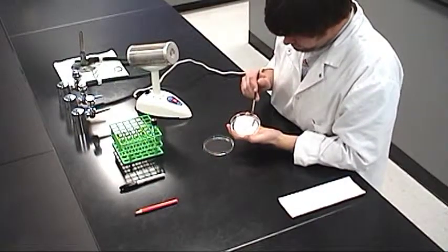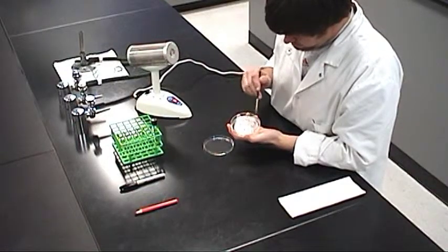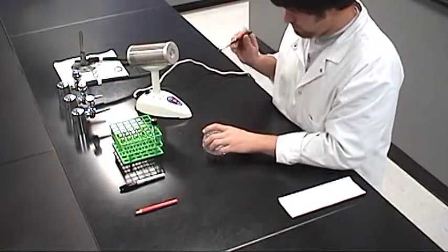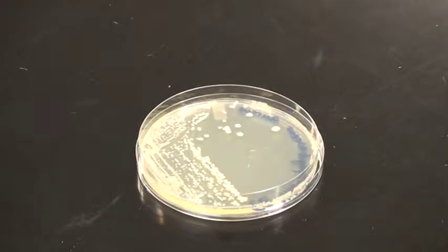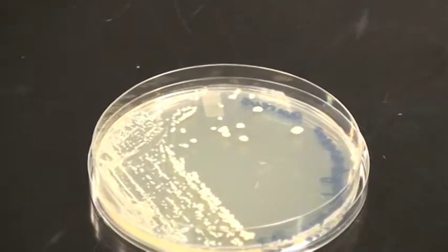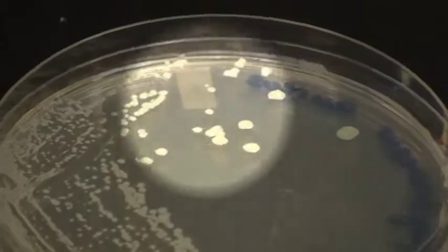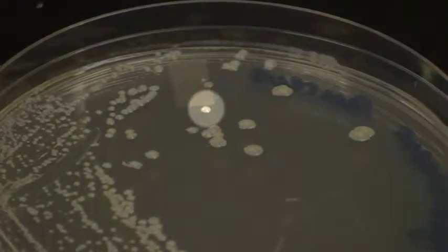This video demonstrates the correct way to prepare a streak plate. A well-prepared streak plate produces an area that contains a single colony of an isolated bacterium species from a single organism to be used for experimentation.